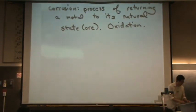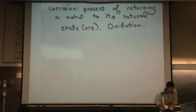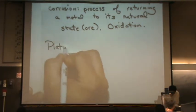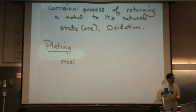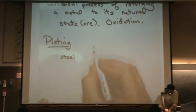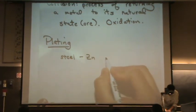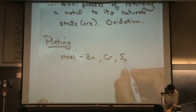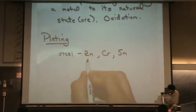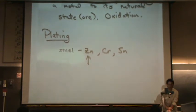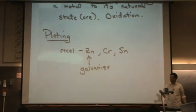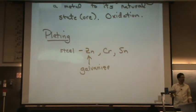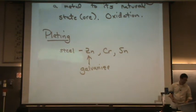Another way to protect something is called plating. For steel — which is iron with some carbon in it — common plating materials include zinc, chrome, and tin. If you put zinc on steel, does anybody know what that's called? That's galvanized. So if you have galvanized nails, that's zinc on your nail. The reason they do that is that zinc oxidizes before the iron in the nail, so it keeps your nails from rusting.